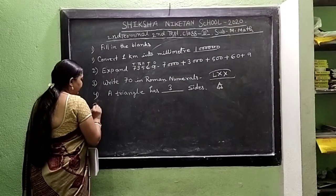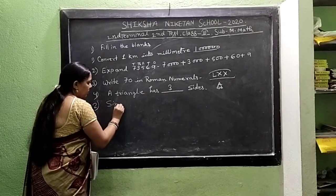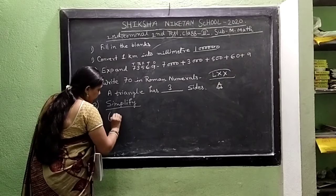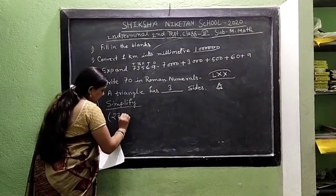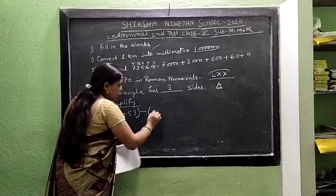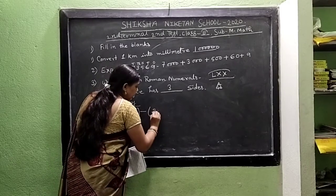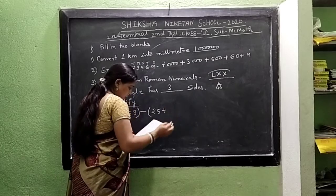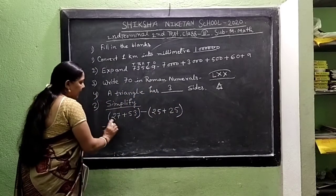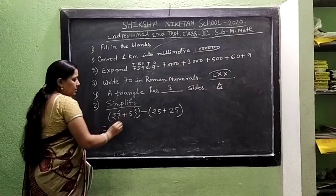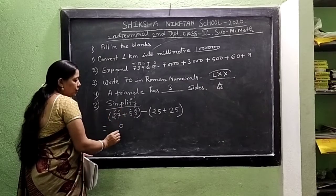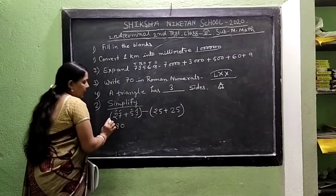Next math is simplify. The math is 27 plus 53, bracket close, put the symbol of minus, then small bracket start, 25 plus 25, bracket close. First we add those numbers in the first bracket: 7 plus 3 is 0, carry 1; 5 plus 2 plus 1 is 8. So the first bracket gives 80. Symbol is complete.